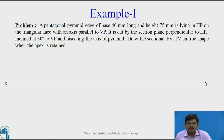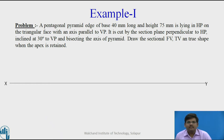Let us start the drawing. The first step — we draw the XY line. To finalize the first stage, look into the question: the pyramid is lying in HP on the triangular face with axis parallel to VP. So depending upon this condition, we decide that the pyramid is resting on HP with its axis parallel to VP and perpendicular to HP. In this case, the top view of the pyramid will be a pentagon.